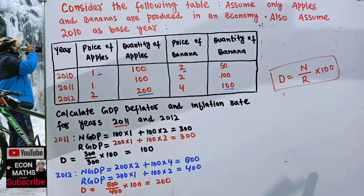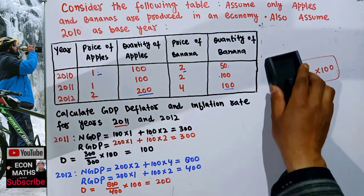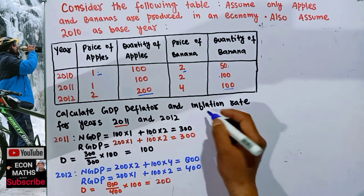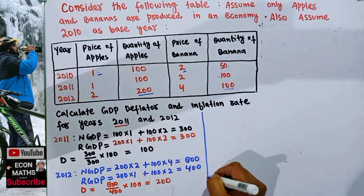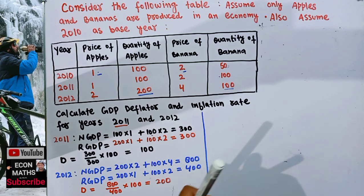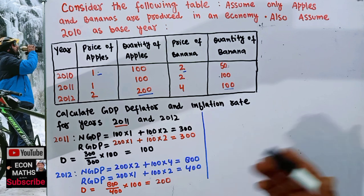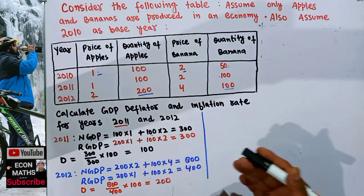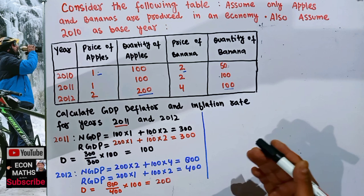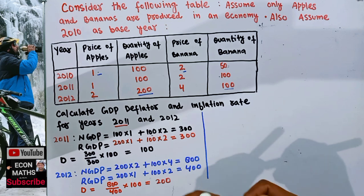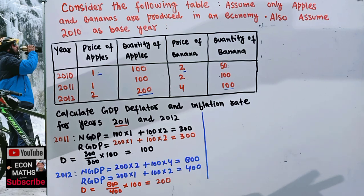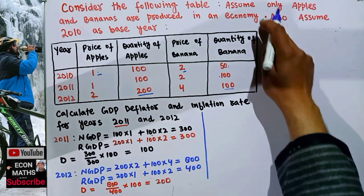Now to calculate the inflation rate: inflation means the change in the price level over time. Inflation is the percentage change in the consumer price index (CPI) between two years. Let me first show how to calculate the CPI.